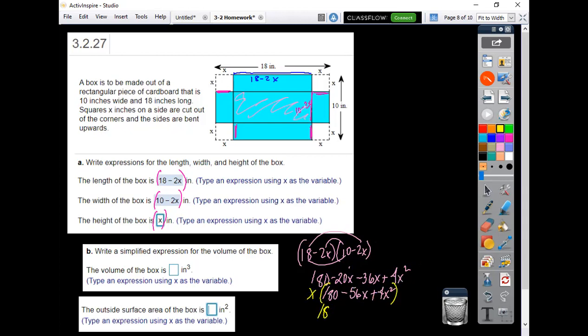Then I still have to take that times the height of the box. So then I'd end up with 180x minus 56x squared plus the 4x cubed when I distribute this x out here, the height of the box, times each of those. Then it goes on for the final question, so that right there would have been my volume.